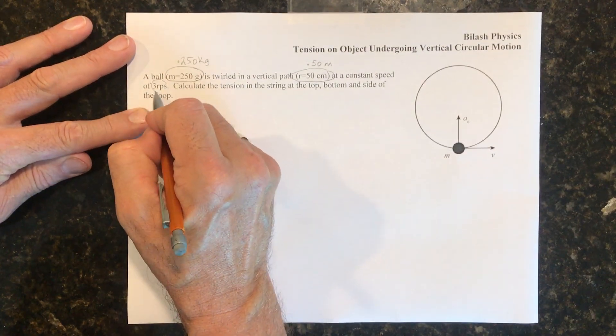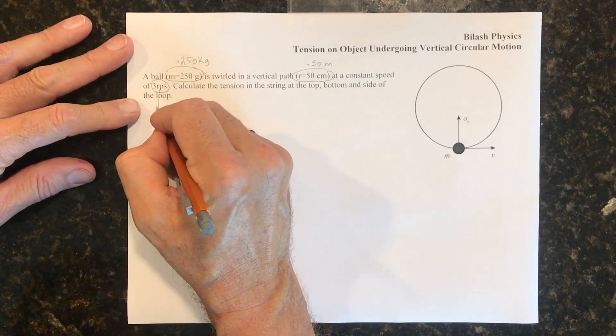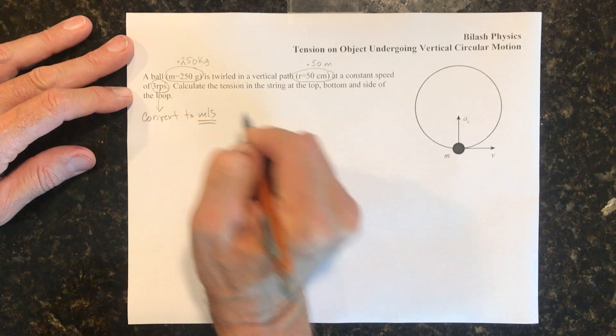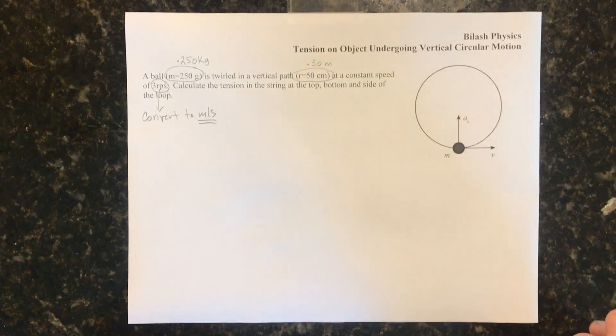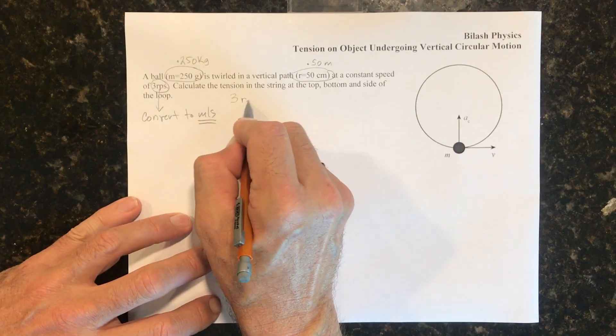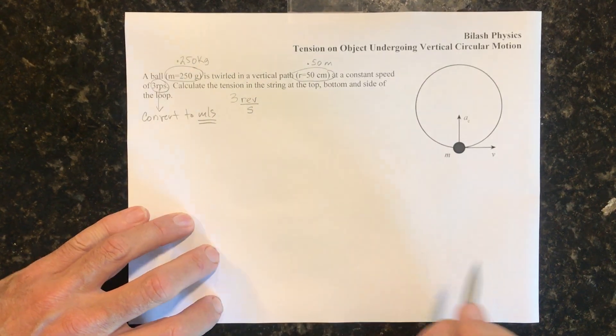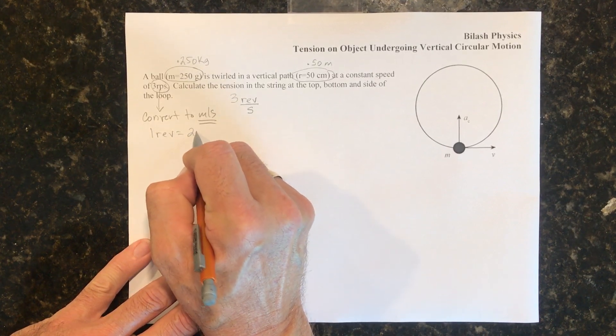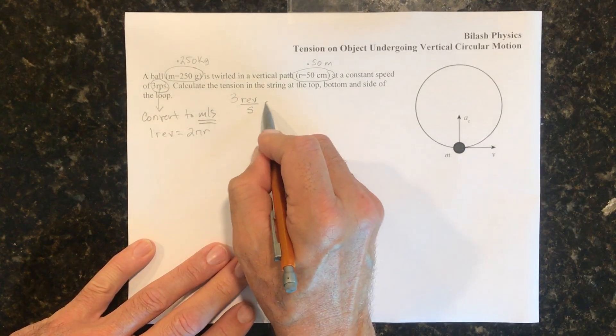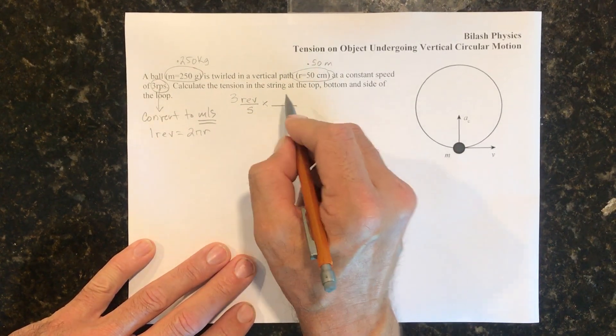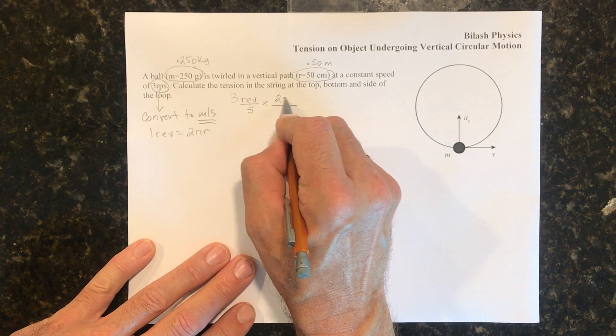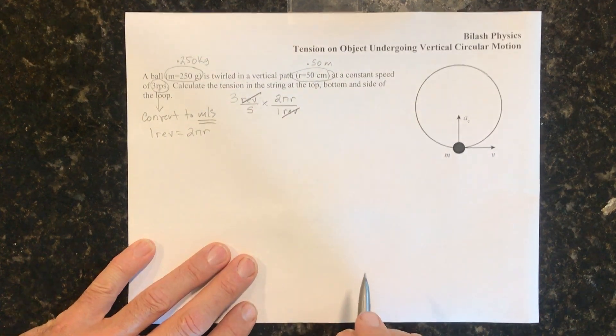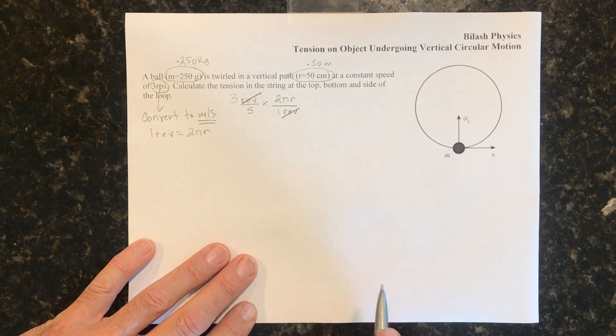And now for the three revolutions per second, we're going to have to convert that to meters per second. So we know that we have three revolutions per second, and we know that one revolution is equal to 2πr. So if we multiply this by that relationship, 2πr is one revolution, the revolutions will cancel and we will be left with meters per second in the end.